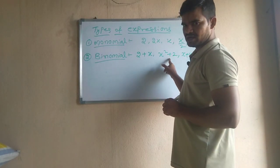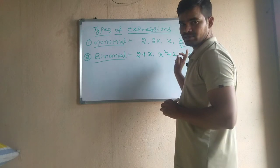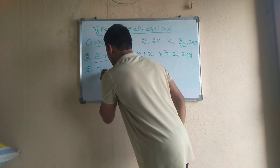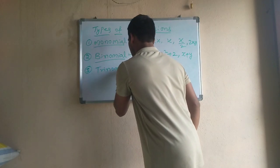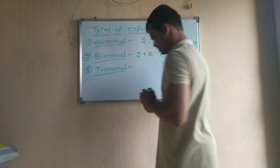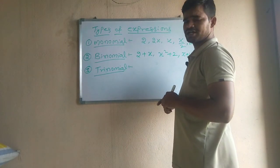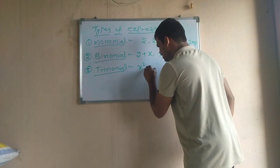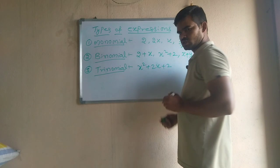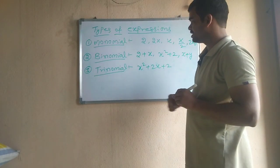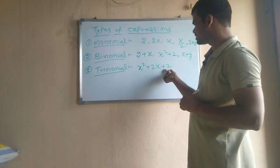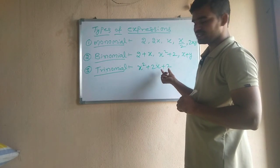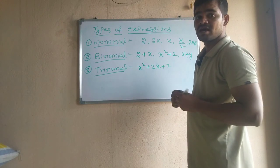More examples of binomials: x squared plus 2 and x plus y. Next, we have trinomial expressions. Trinomial means three terms. If we have an expression with three terms, it is called a trinomial expression. For example, x squared plus 2x plus 2 is an expression with three terms, so it is a trinomial expression.